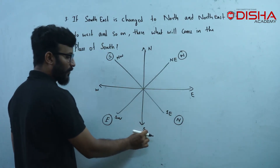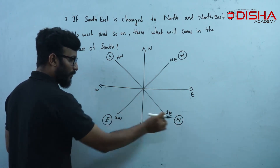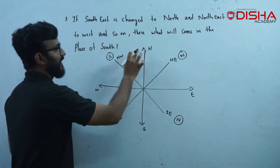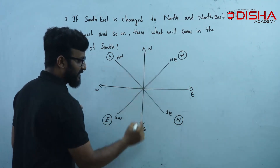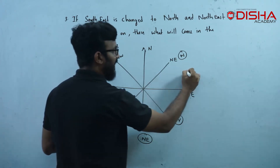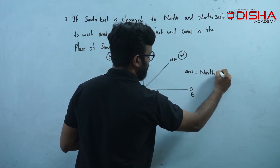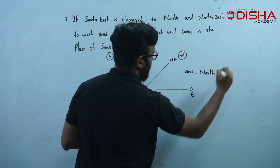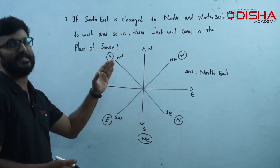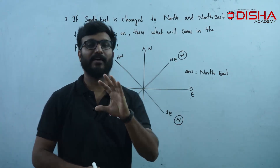South is changed to North and East. North is changed to North and East. What will come in the place of North and East? North is changed to South. So we will go to North — the answer is North.